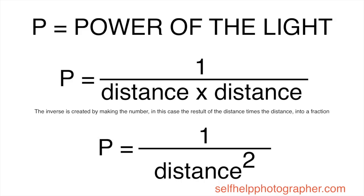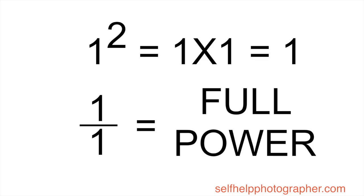The math is actually very simple. In this equation, P is equal to the power of the light. To figure out the power of the light, we take the inverse of the distance squared — simply multiplying the distance by itself and turning it into a fraction. So P equals one over the distance squared. At one foot from the flash, the light is at full power, because one squared equals one and one over one is full power.